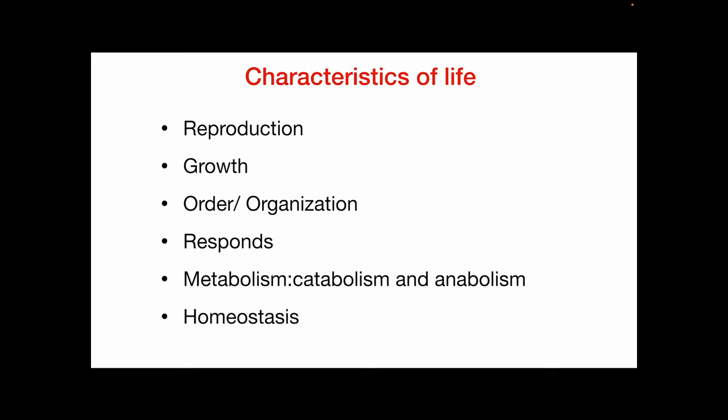We also have metabolism, which is the ability of the organism to break down large molecules into smaller ones and bring smaller molecules together to form large ones in order to produce energy. In short, metabolism refers to all the chemical processes in the body. For example, breaking protein into amino acids is catabolism, and assembling amino acids into human proteins is anabolism.